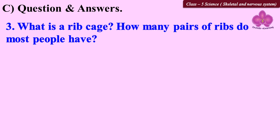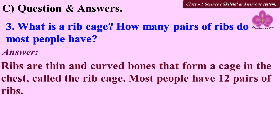Question 3: What is a rib cage? How many pairs of ribs do most people have? Ribs are thin and curved bones that form a cage in the chest called the rib cage. Most people have 12 pairs of ribs.